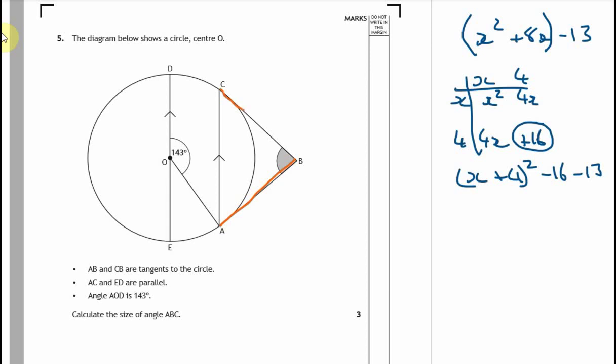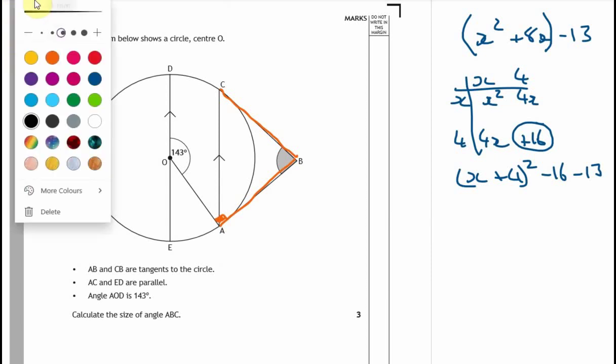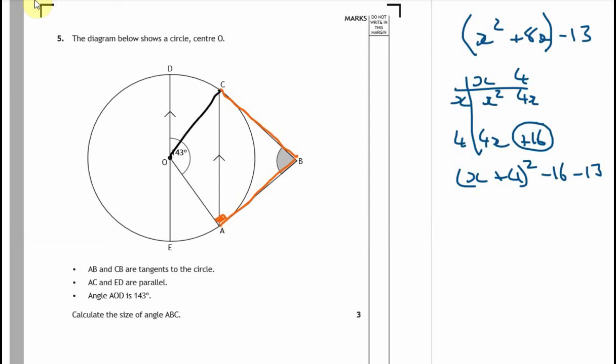The tangent rule is when a tangent meets a circle, it meets the radius of that circle at 90 degrees. So I know right away that that's 90 degrees because OA is obviously a radius from the center to circumference. They've not drawn it in, but obviously this is also 90 degrees. We know those are both 90 degrees. And you should be thinking, what kind of shape is that? Oh, it's a kite.